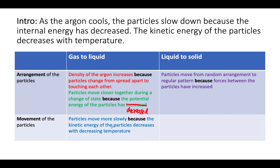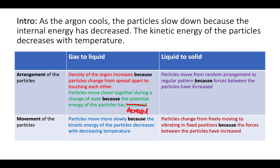In the second paragraph — liquid to solid — in a liquid the particles have a random arrangement and they move freely, but they transition to a regular pattern in a solid. This is because the forces between the particles have increased, stopping the particles from moving around each other. For movement: the particles change from freely moving to vibrating in fixed positions, because the forces between the particles have increased.